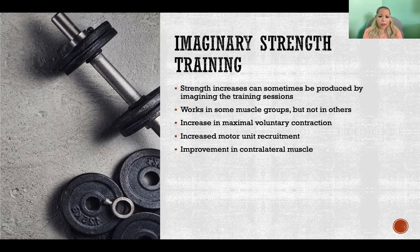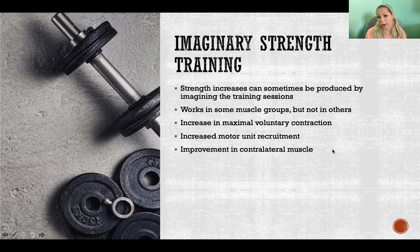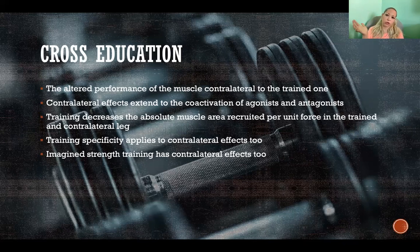When imaginary strength training does work, it causes an increase in maximal voluntary contraction, increased motor unit recruitment, and improvement in the contralateral muscle. So if we're doing imaginary strength training only on one side — say, imagining doing it with just the right side of the body — we will also see improvement on the left side. If that's not evidence of neural adaptation, then there is none. That's cross education: the altered performance of a muscle contralateral to the trained one.